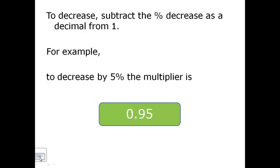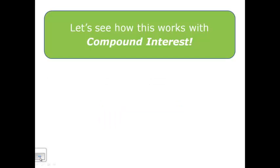To decrease, we would subtract that percentage. So if there was a 5% discount, we're paying 95%. Now, how does this work with compound interest?